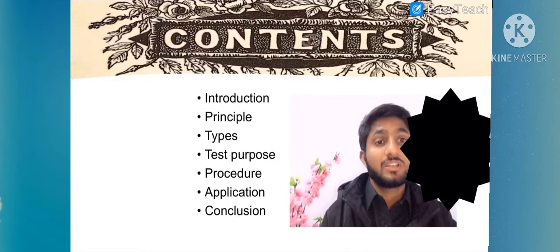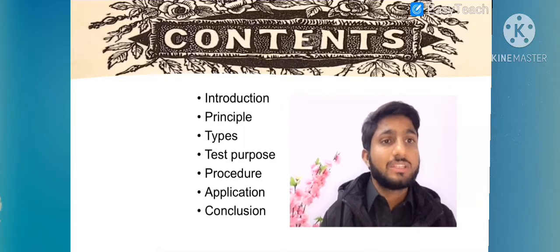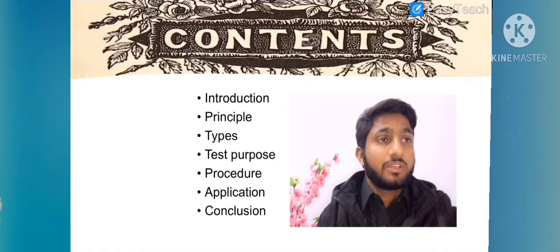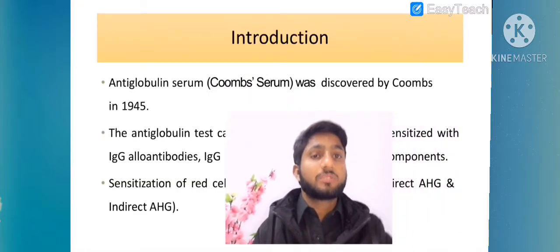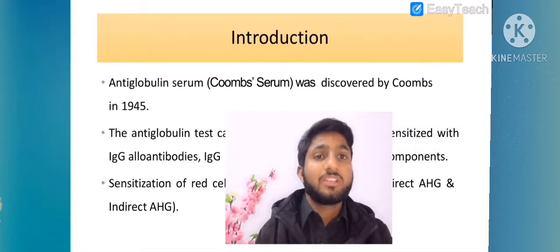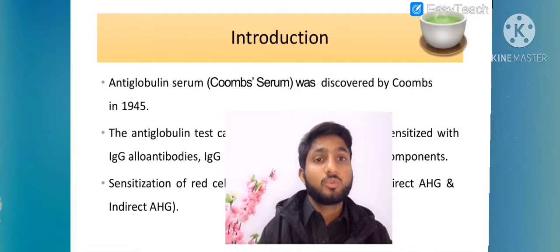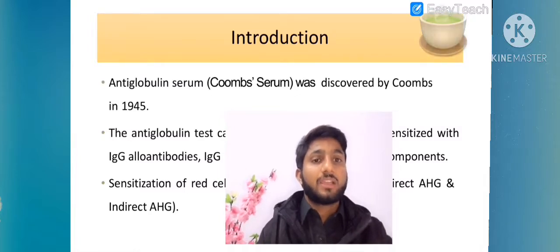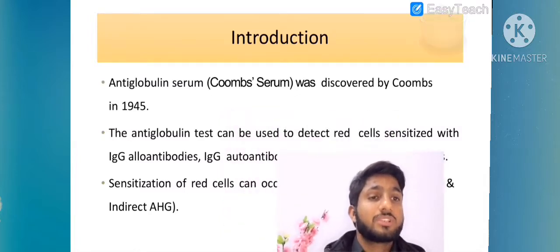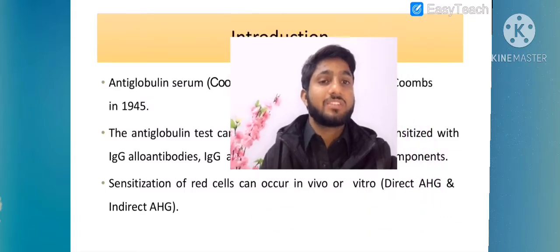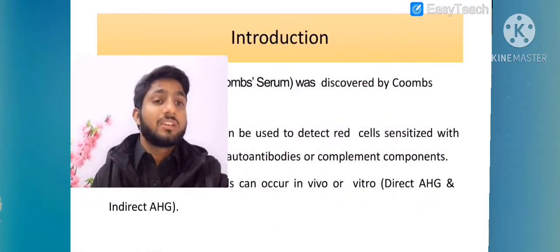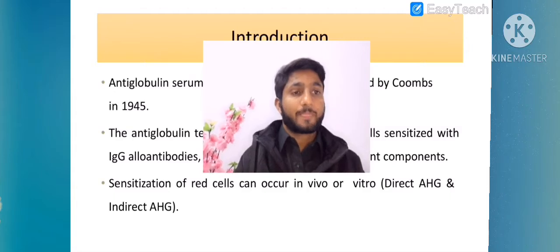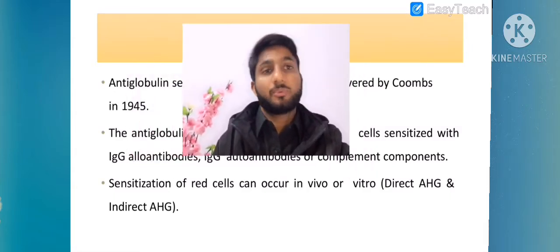We will discuss in detail: first introduction, principle, types, test purpose, procedure, applications, and conclusion. Anti-human globulin or anti-globulin serum was first discovered by Coombs in 1945. The anti-globulin test can be used to detect red cells sensitized with IgG alloantibodies, IgG autoantibodies, or complement components.